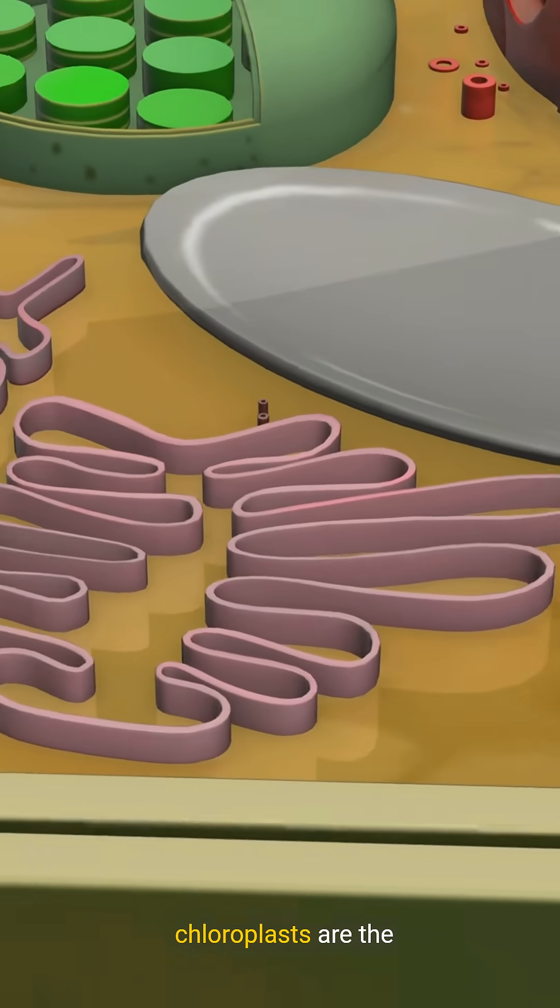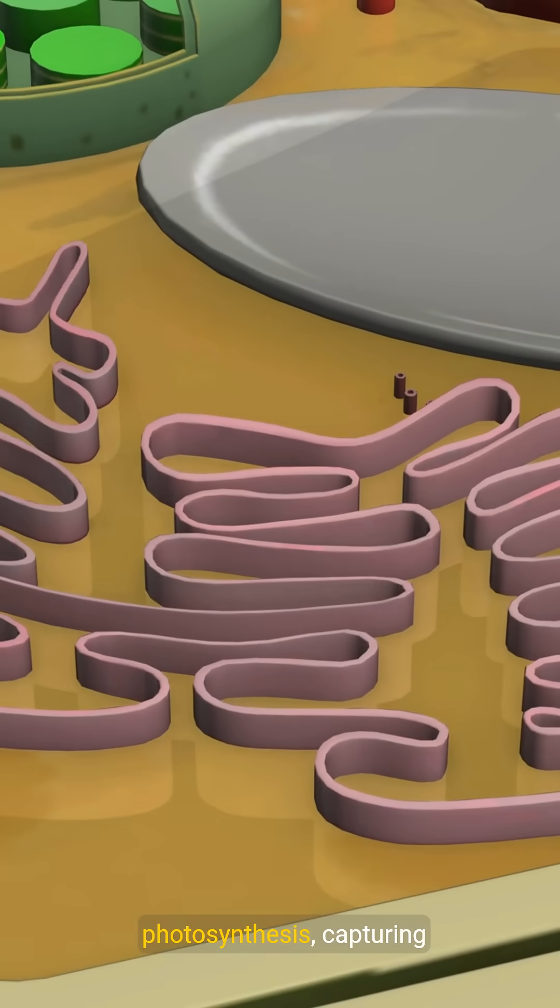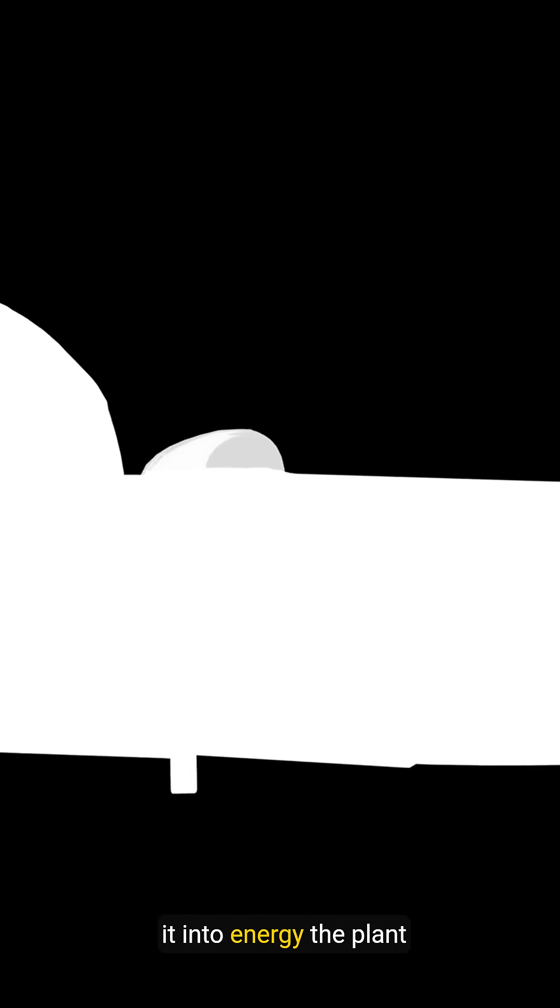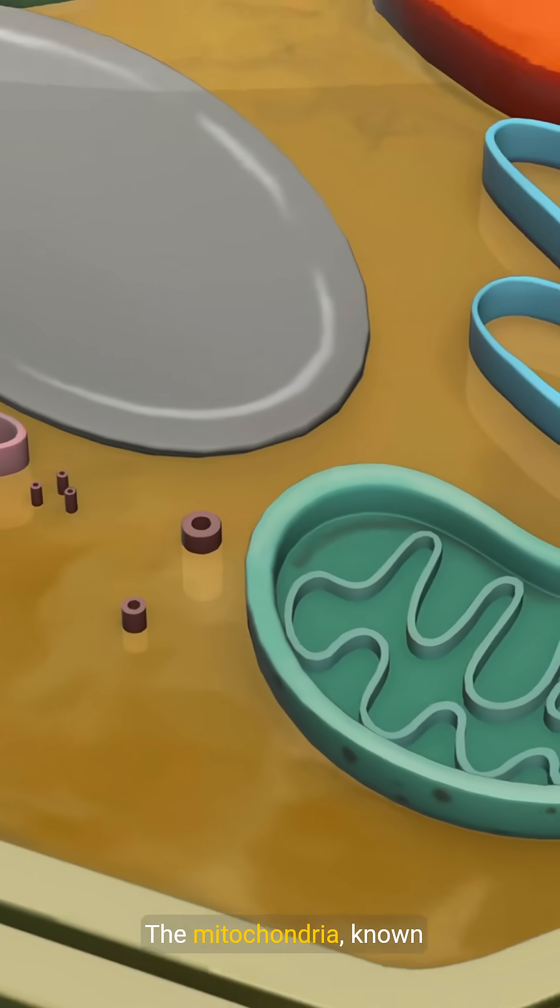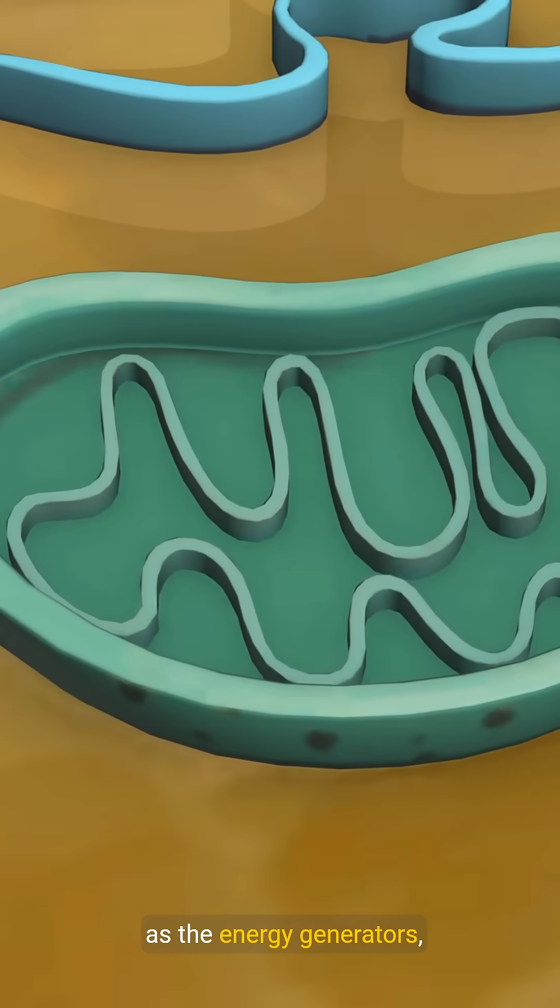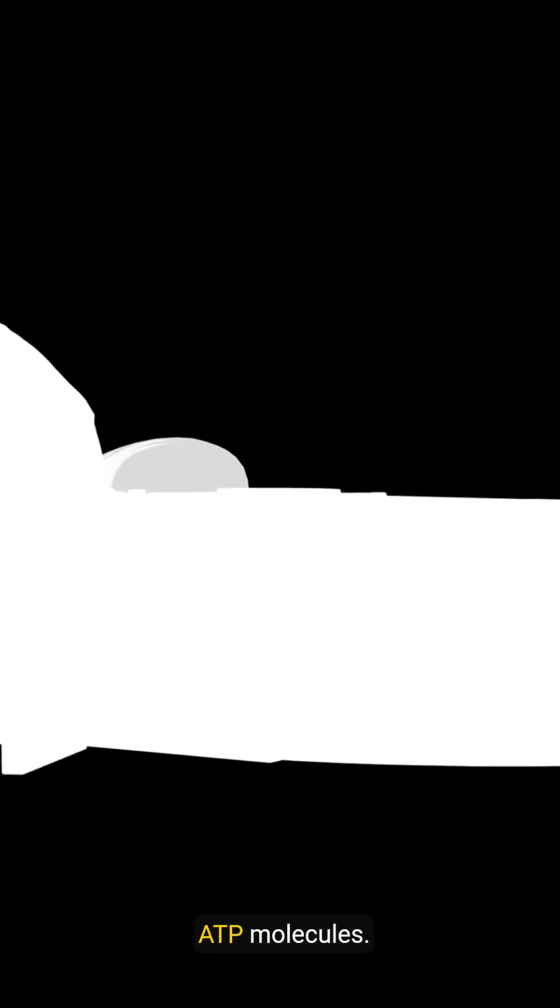The chloroplasts are the powerhouses of photosynthesis, capturing sunlight and converting it into energy the plant can use. The mitochondria, known as the energy generators, break down nutrients to release energy stored in ATP molecules.